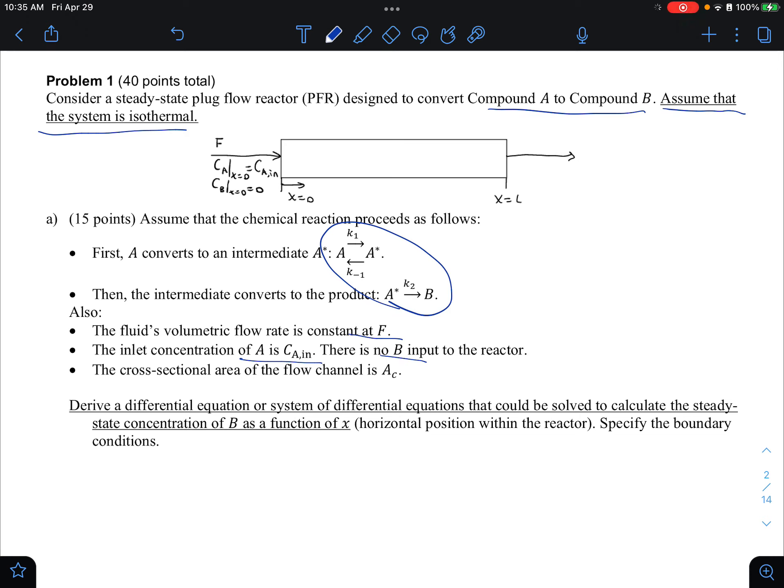There is no B, and it doesn't say this, but there should be no A star as well. We have a constant cross-sectional area, A sub C, and the problem says derive a differential equation or system of differential equations that could be solved to calculate steady-state concentration of B as a function of X. Okay, so I'm going to box this because that's what the question is actually asking for. So we want an equation, differential equation. We're not given numbers here, so we can't solve it, and we want to specify the boundary conditions.